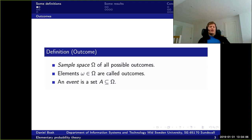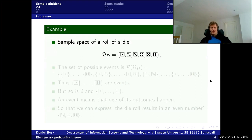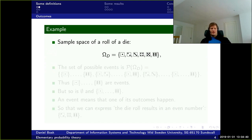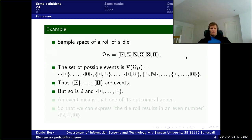This doesn't make much sense on its own, but we'll see some examples. Let our sample space be the roll of a die — each outcome is what the die will show. For a standard six-sided die, the possible outcomes are one, two, three, four, five, or six: whichever face comes up after the roll. The sample space is basically these outcomes.